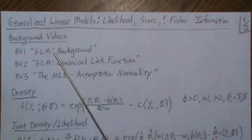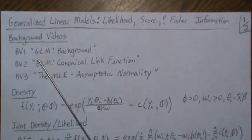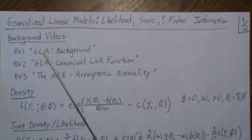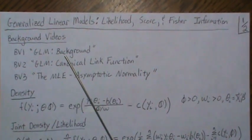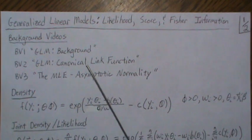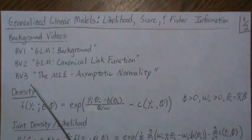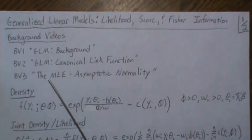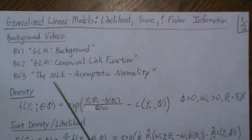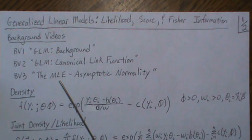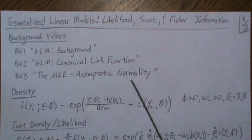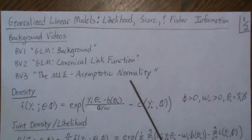There are three background videos. The first two in this series are called 'Background and Canonical Link Function,' and then one called 'MLE and Asymptotic Normality.'